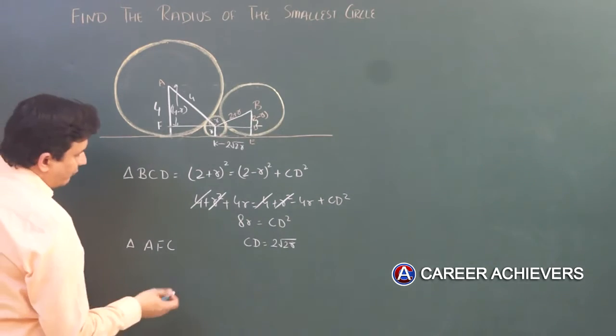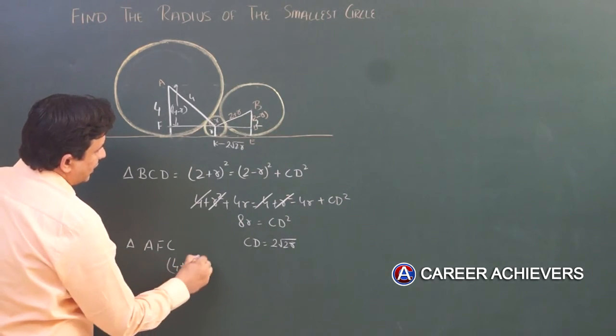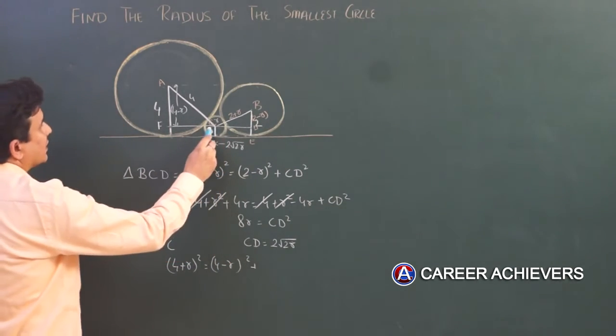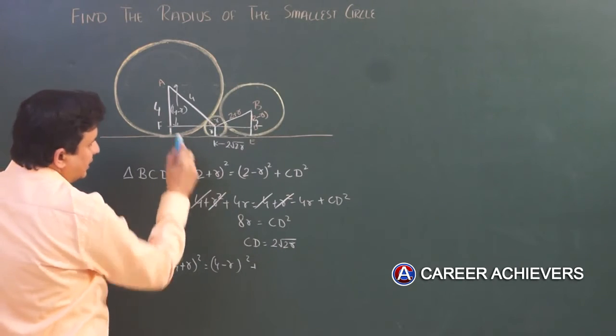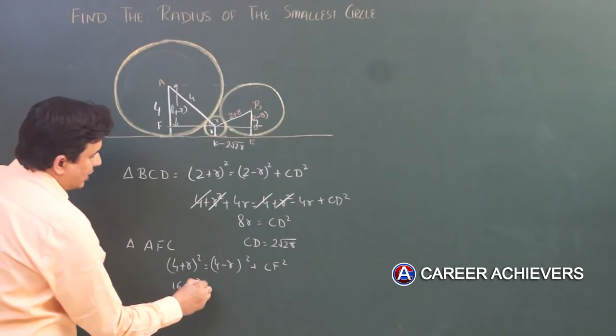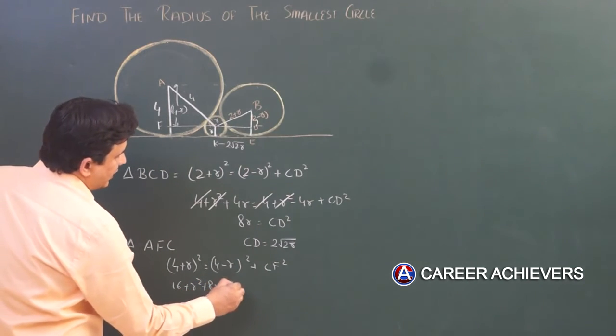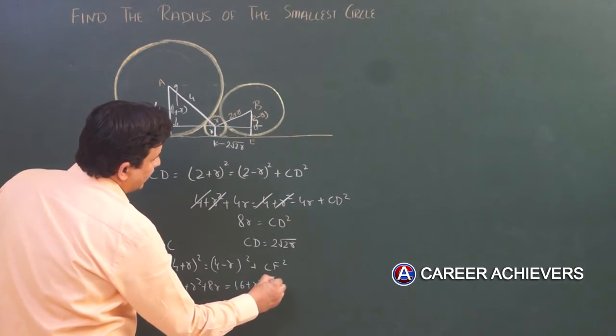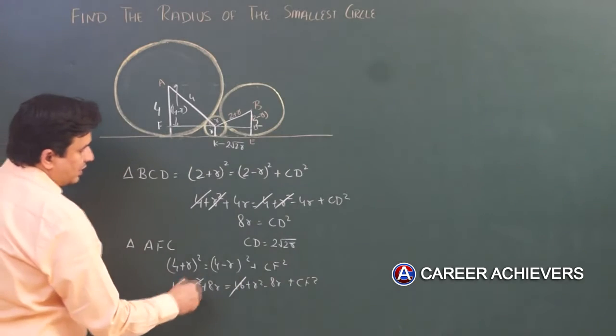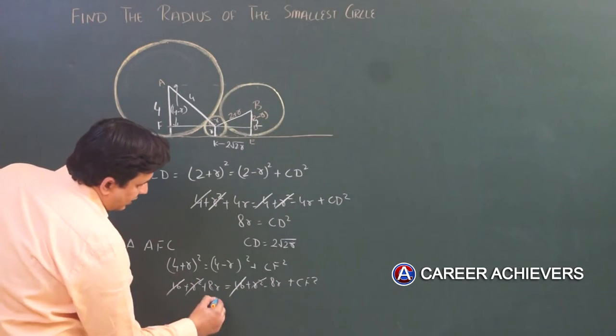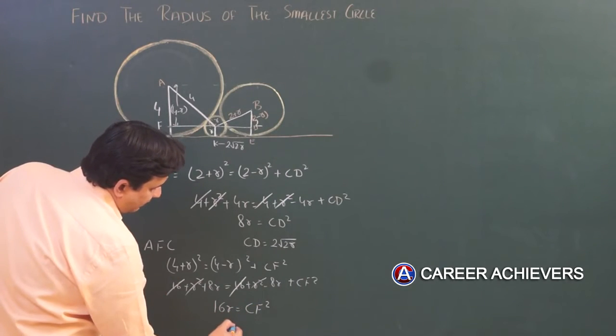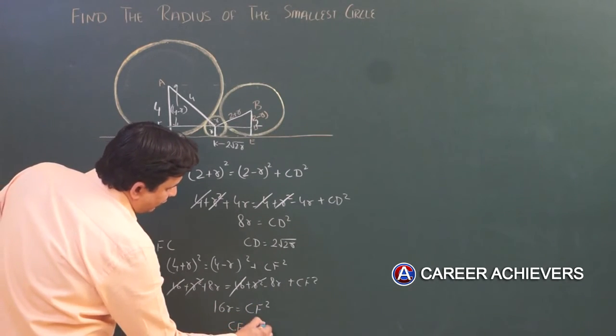Here we can write: (4+R)² equals (4-R)² plus CF². 16 + R² + 8R equals 16 + R² - 8R + CF². 16 cancels with 16, R² cancels with R², this comes to this side. 16R equals CF².